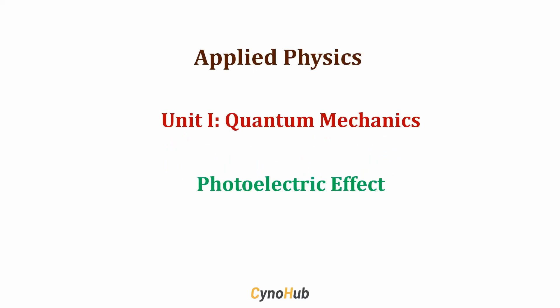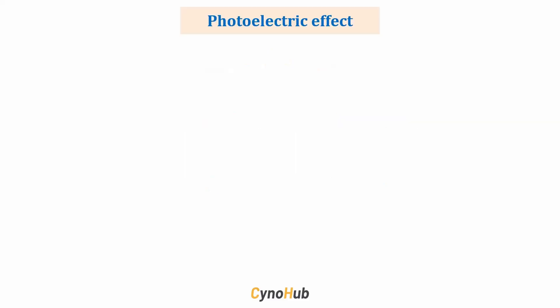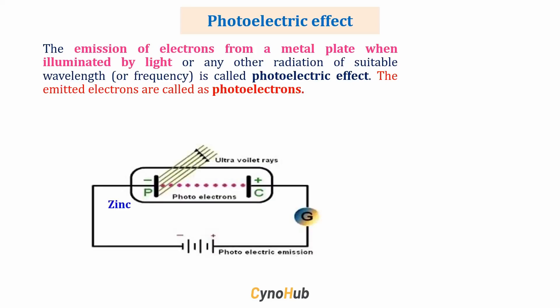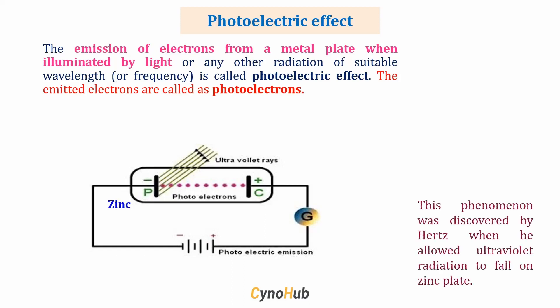We'll be discussing the photoelectric effect in our quantum mechanics unit in the subject of applied physics. The emission of electrons from a metal plate when illuminated by light or any other radiation of suitable wavelength is called the photoelectric effect. The emitted electrons are called photoelectrons.